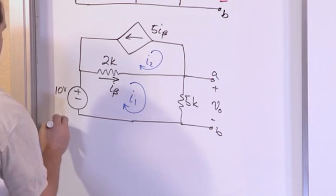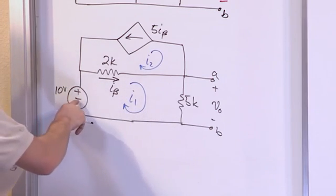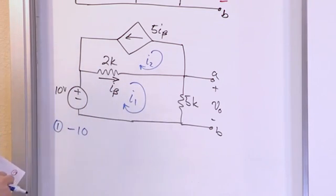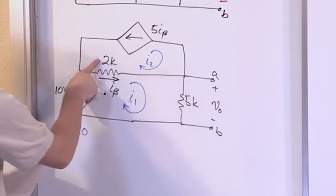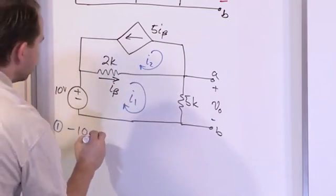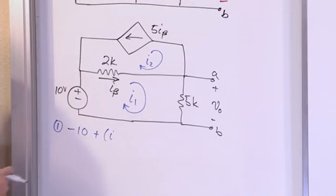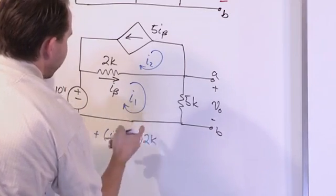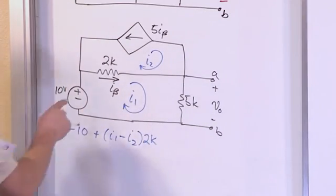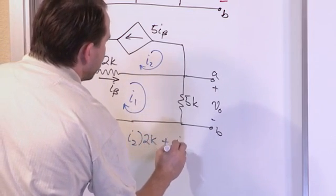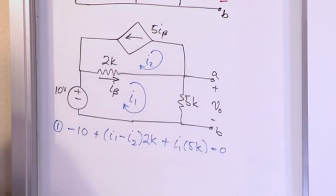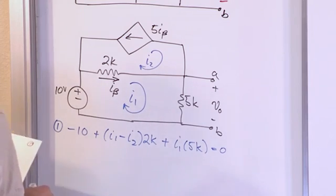Alright, so let's go ahead and start with mesh 1, this guy right here. So going through the source from negative to positive is a voltage rise. So we track that as negative 10. And then when we get to the 2k resistor, it's I1 minus I2. So what we'll have going through the 2k resistor will be I1 minus I2. And we'll just write it as 2k to remind myself of that right now. And then through the 5k resistor will be I1 times 5k. And that's equal to zero. We're all the way back around to where we started. Alright. So let's go ahead and multiply everything through and try to sum...